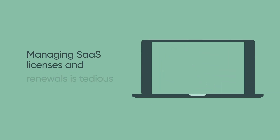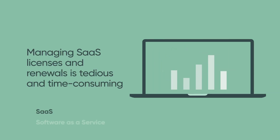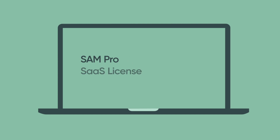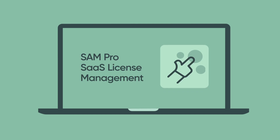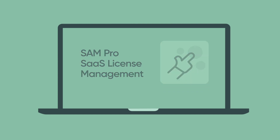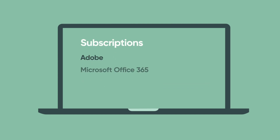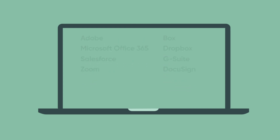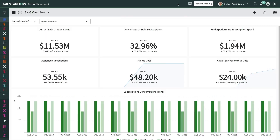Keeping track of SaaS licenses, monitoring their use, and managing renewals can be a tedious and time-consuming task. With SAM Pro's SaaS license management capabilities, you can manage your subscriptions for Adobe, Microsoft Office 365, Salesforce, Zoom, Box, Dropbox, G Suite, and DocuSign. By using a single platform, you get visibility into the utilization of top SaaS products and can proactively manage your licensing needs to optimize SaaS spending.